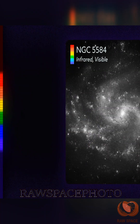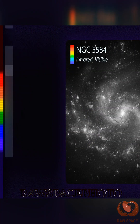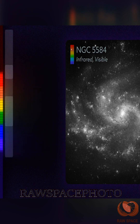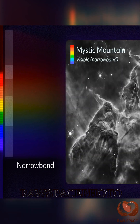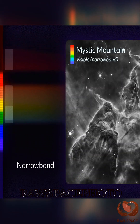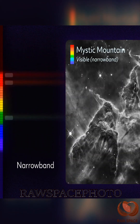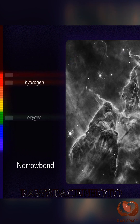When Hubble snaps a photo, it puts a filter in front of its detector, allowing specific wavelengths to pass through. Broadband filters let in a wide range of light. Narrowband filters are more selective, isolating light from individual elements like hydrogen, oxygen, and sulfur.